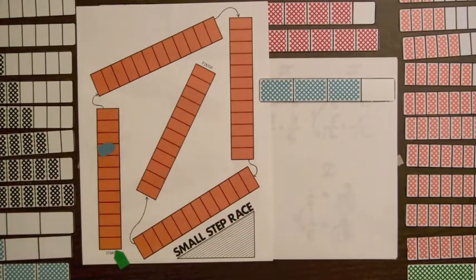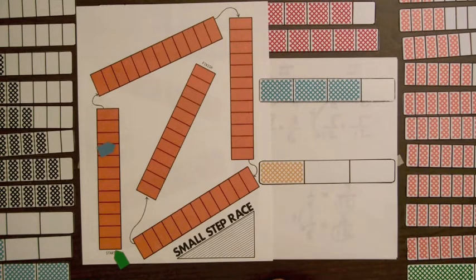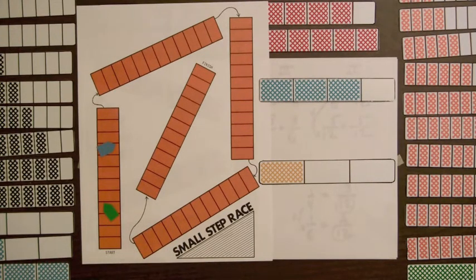The student selects this yellow bar with one part shaded. That's going to be four steps.